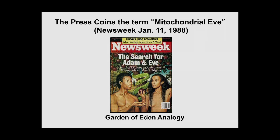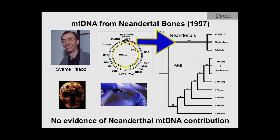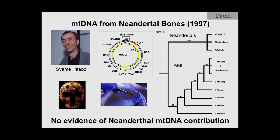Another nail in the coffin of multi-regional evolution came ten years later. Svante Pääbo, who had been working in Alan Wilson's lab recovering ancient DNA from fossil material, was successful in 1997 in isolating DNA from Neanderthal bones. They sequenced a small portion of the mitochondria called the D-loop and reconstructed a gene tree. They found that Neanderthals formed a clade quite distinct from everything segregating in modern humans, suggesting no mixing or interbreeding — again supporting complete replacement, at least with respect to Neanderthals.